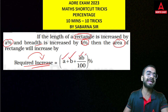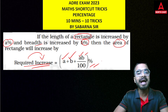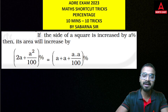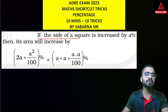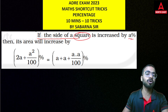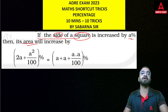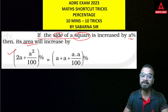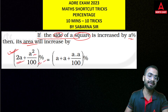You will get the answer using a plus b plus ab by 100. If the side of a square is increased by a percent, you will directly use the shortcut: 2A plus A squared by 100%.